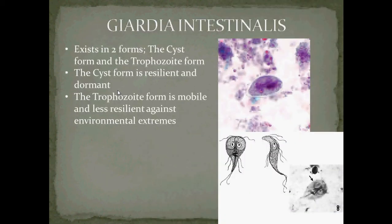Giardia intestinalis exists in two forms: the cyst form and the trophozoid form. The cyst form is resilient and dormant, while the trophozoid form is mobile and less resilient against environmental extremes. This here is the trophozoid form of Giardia intestinalis.